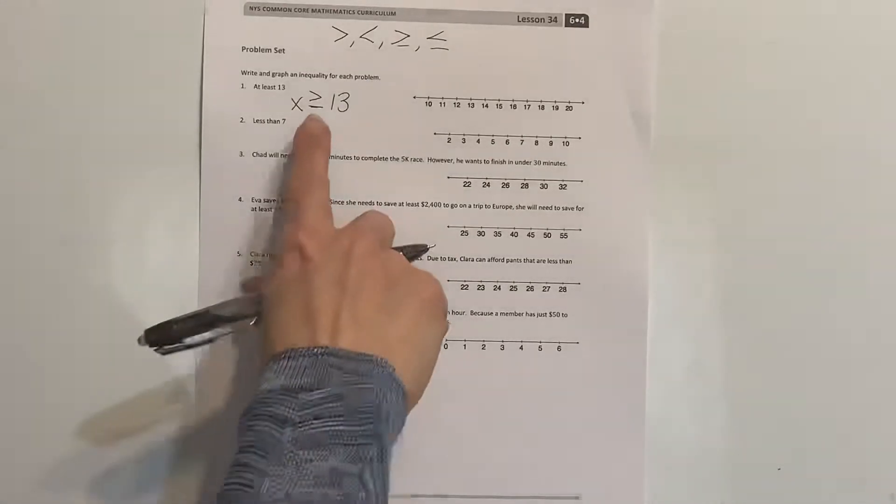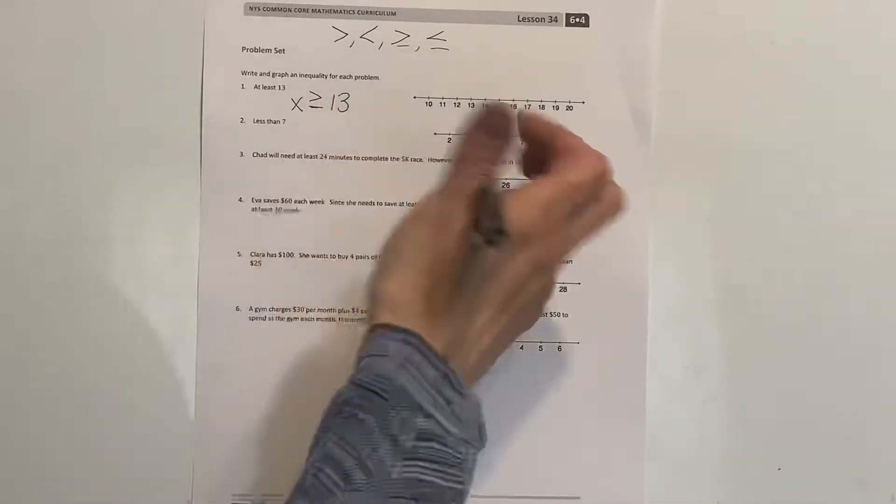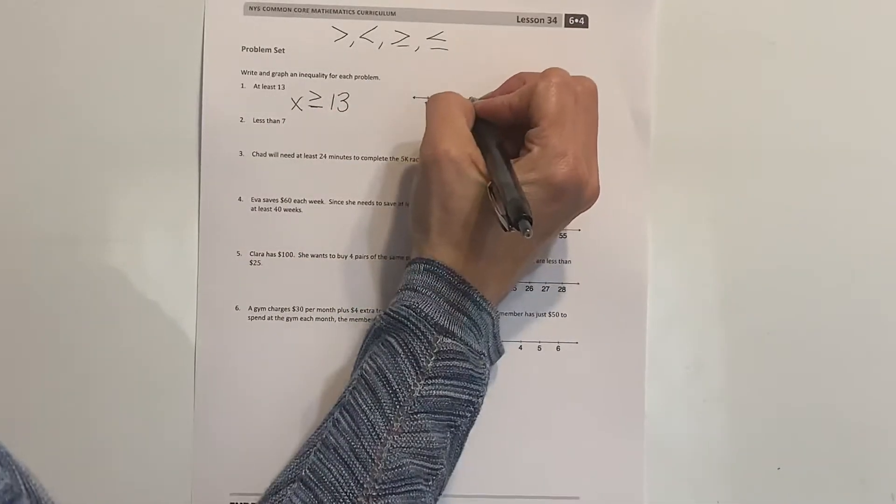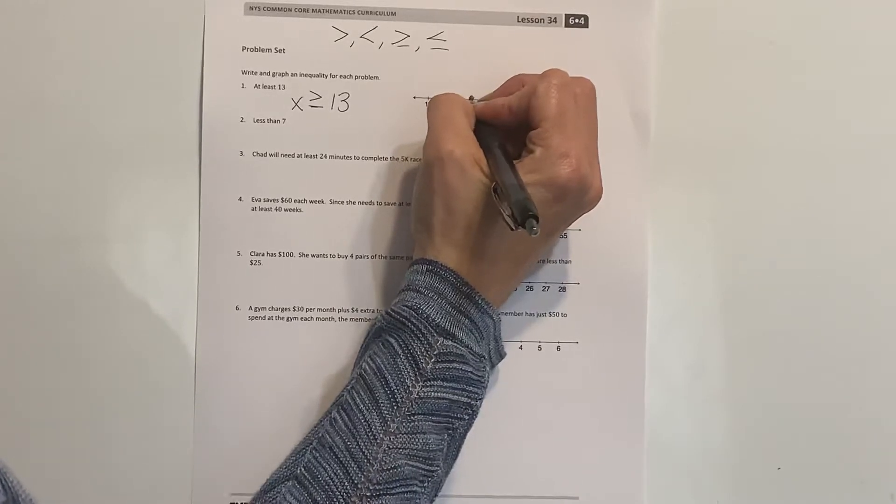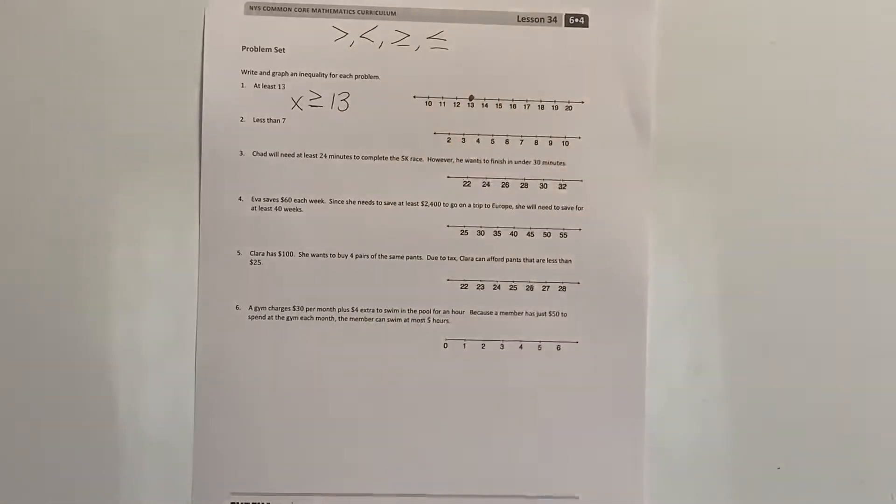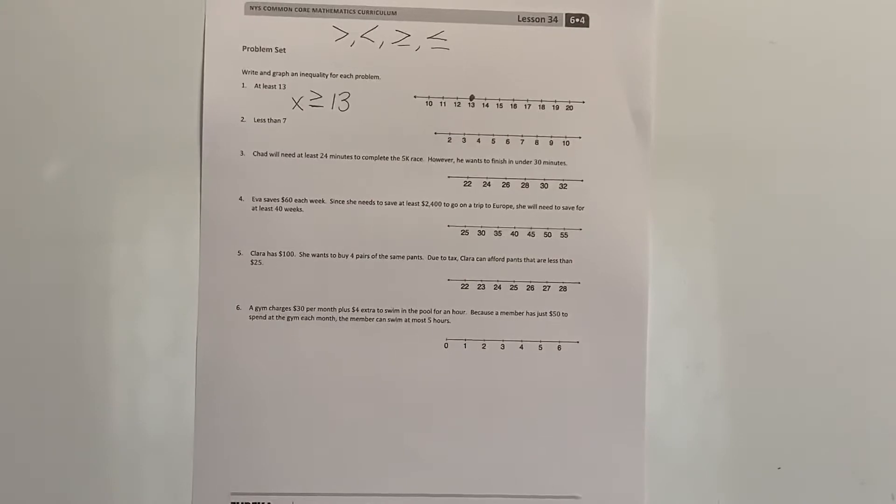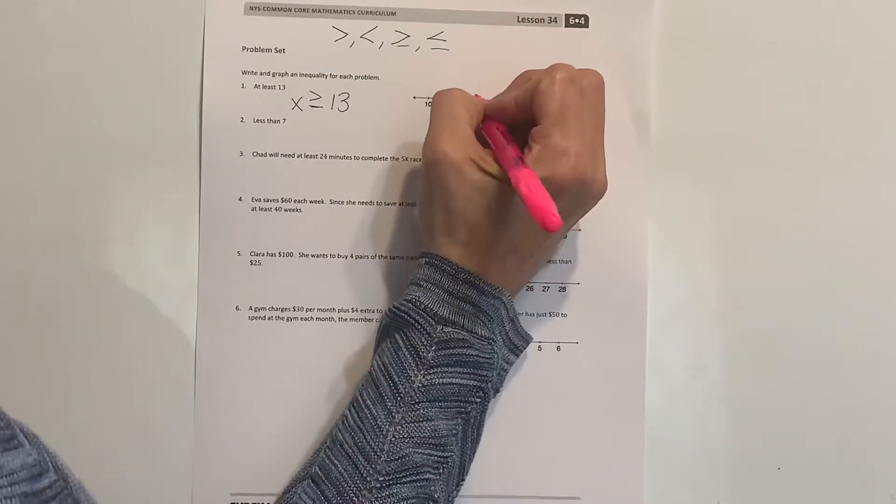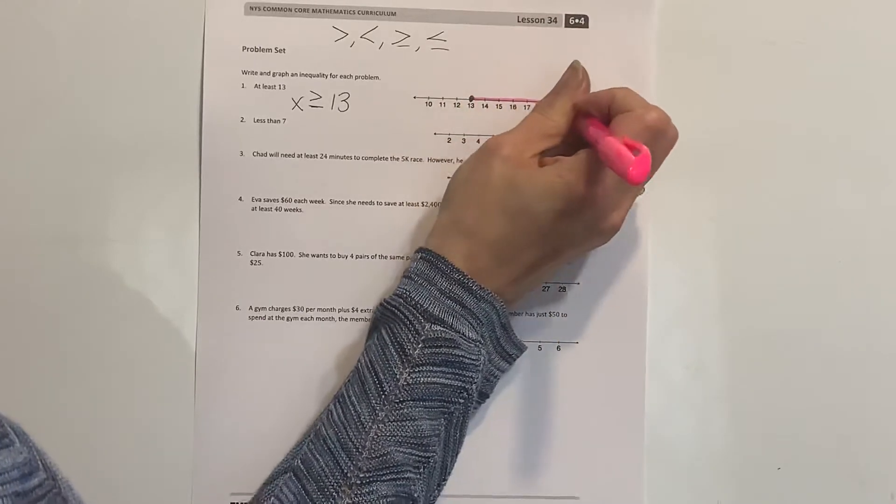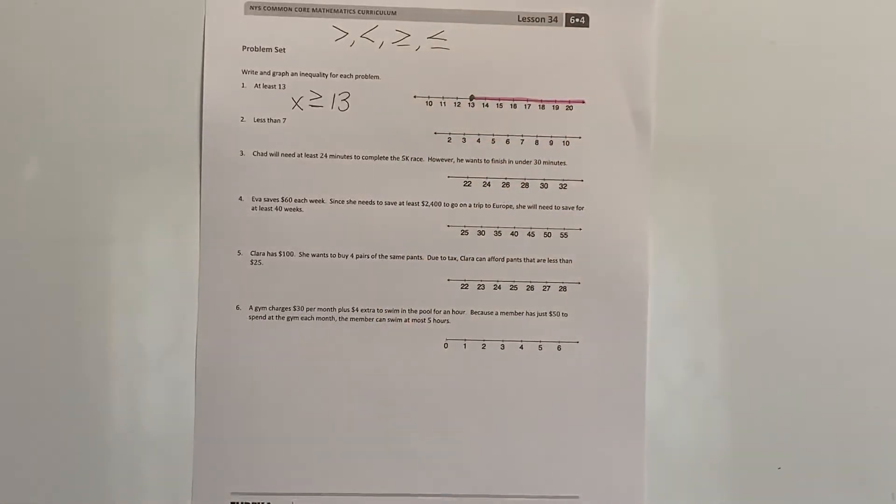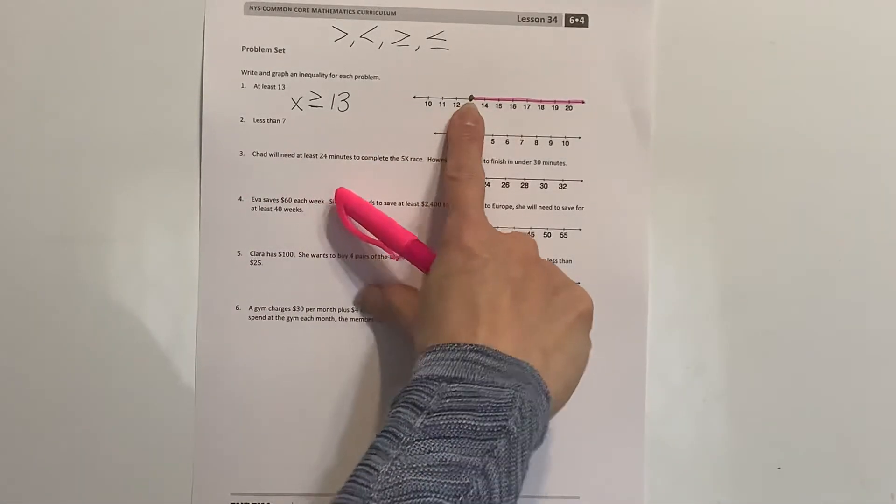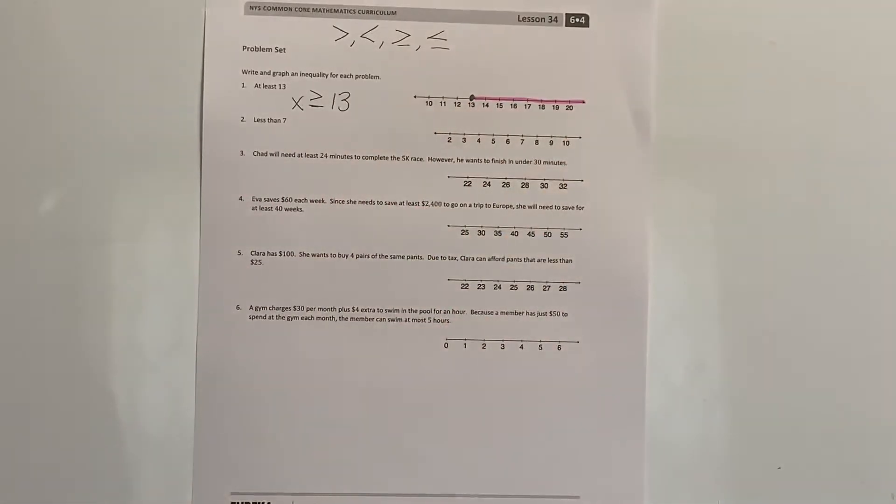When we look at this inequality, it is including because it's equal to, so since it's including we need to put the solid circle. And then since it can be greater than, our line is going to be going over the numbers that are more than 13.